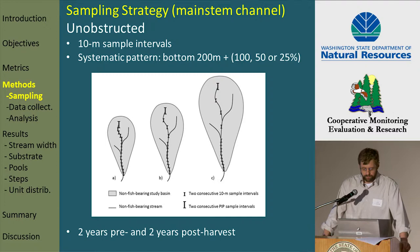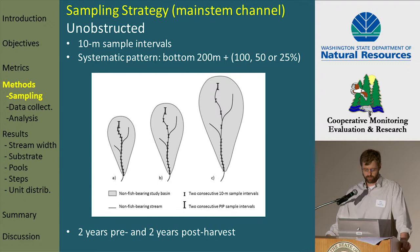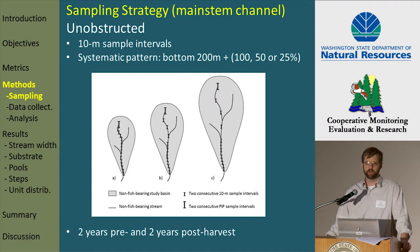Our primary sampling strategy for this component involved 10-meter sample intervals along our main stem channel and a systematic sampling. We always sampled the bottom 200 meters and then a subset of our moderate or large-sized basin — so the bigger the basin, the smaller the proportion of the total length that we sampled. This component also involved two years pre and two years post-harvest, and the 10-meter sample intervals were essentially the same during all of the years.